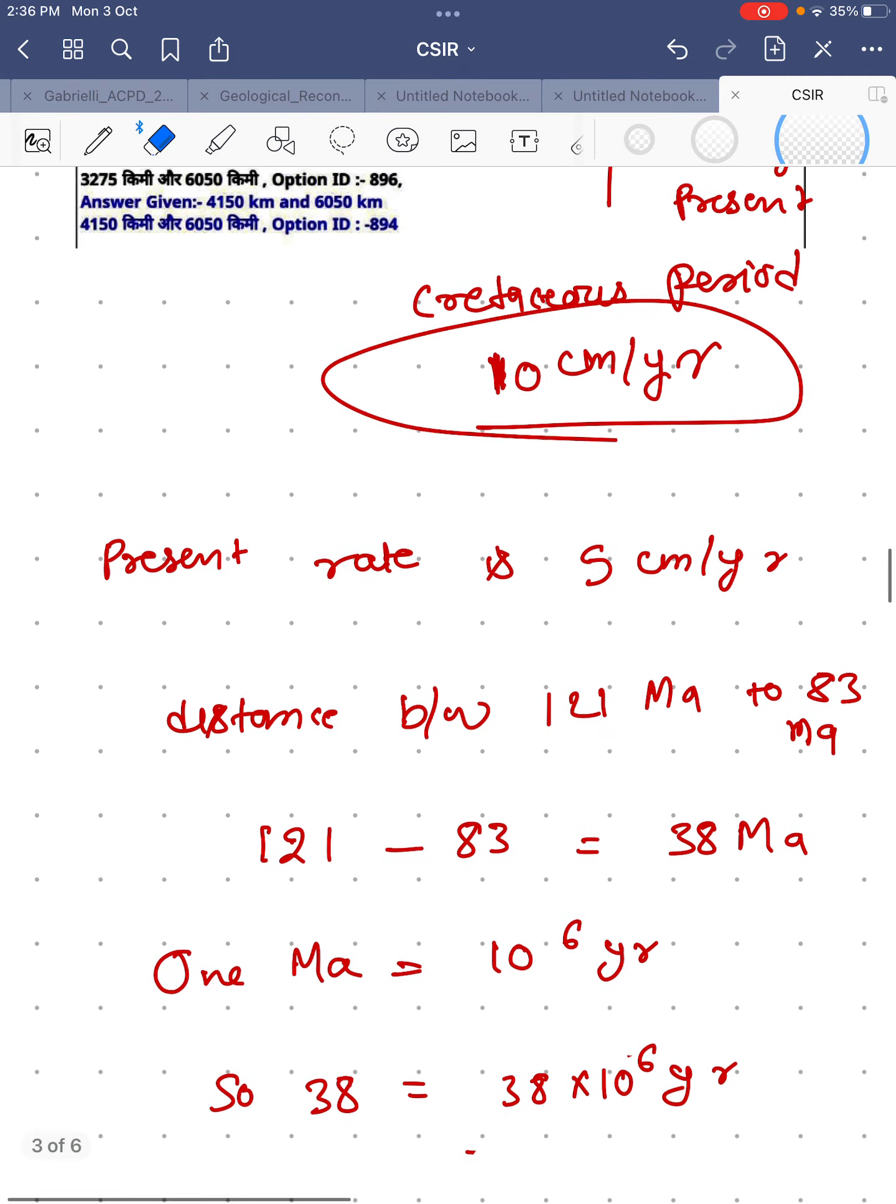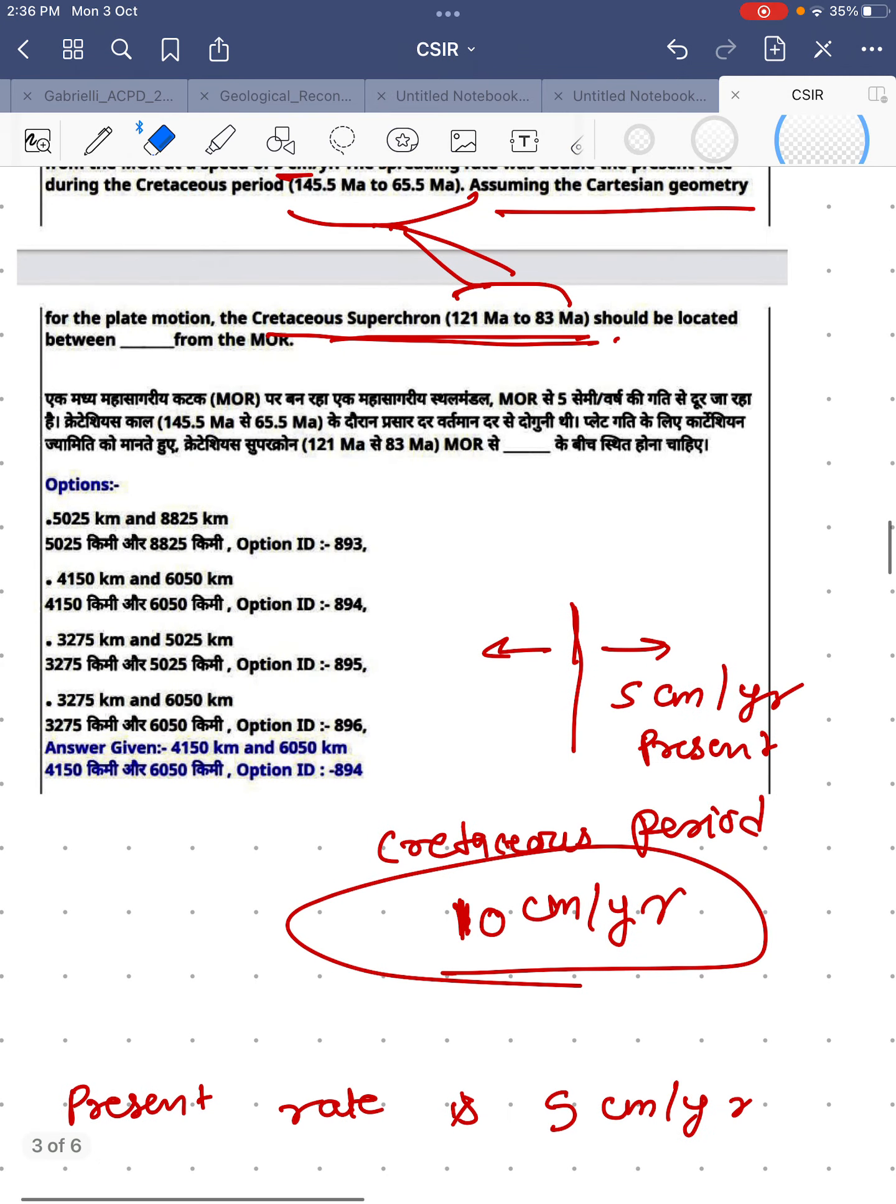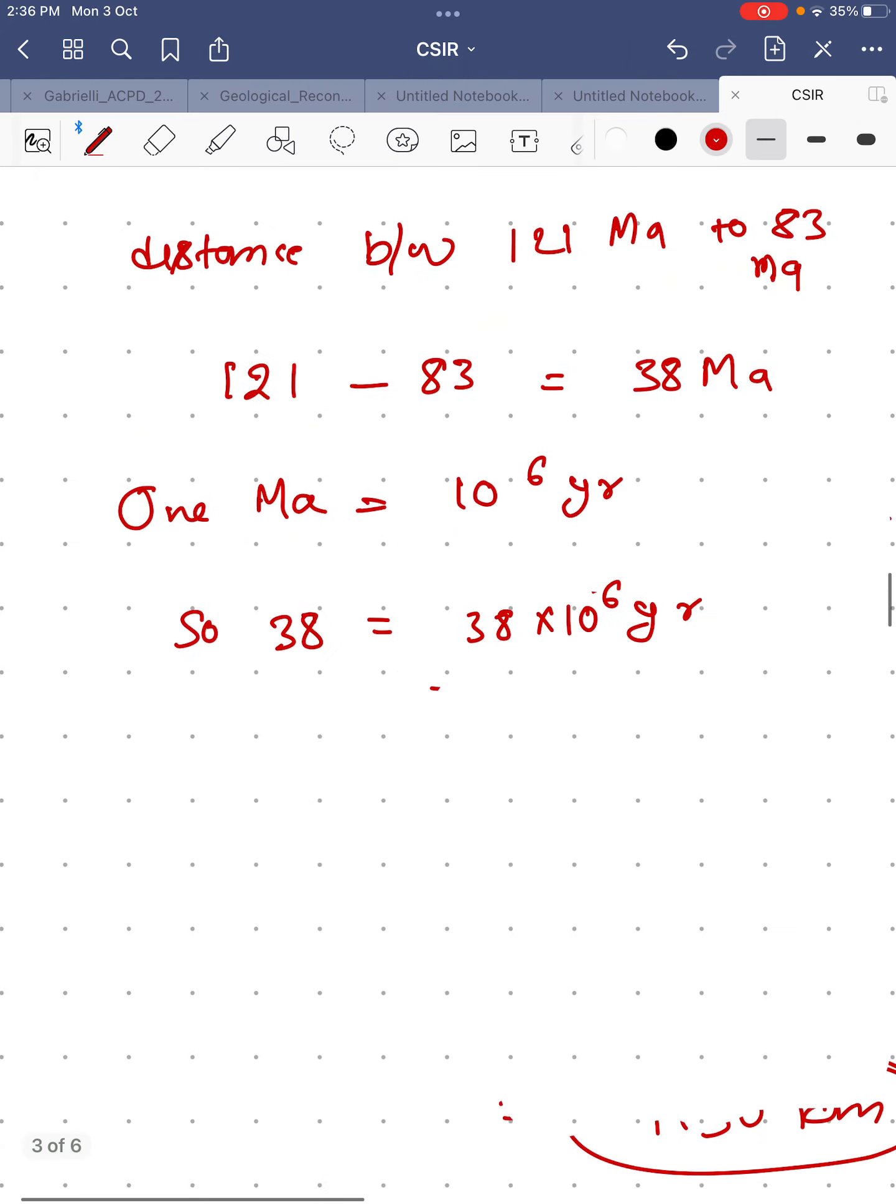Also, according to the question, in the Cretaceous superchron the rate is 10 centimeters per year. So in one year the plate moves 10 centimeters. So in 38 into 10 to the power 6 years, it will move 38 into 10 to the power 7 centimeters.